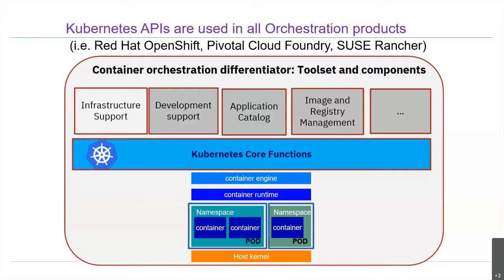The differentiation between these orchestration products is basically the on-top or Kubernetes tool sets delivered. Different products have different tool sets supporting different aspects of an entire IT environment — that's where the differentiation is. But they are all typically based on Kubernetes. Kubernetes itself is the software that can orchestrate containers — note that Kubernetes cannot run containers; it can orchestrate them. You still need a container runtime to run those containers.